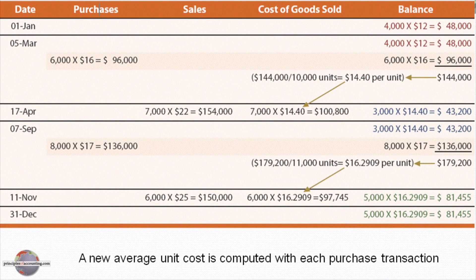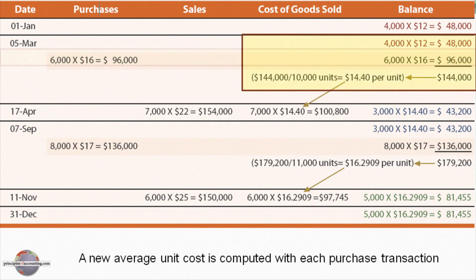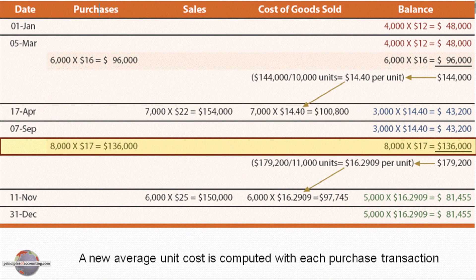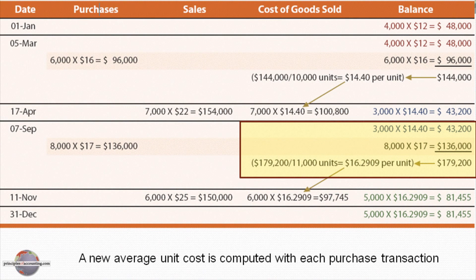Turning next to the perpetual average method, we again start with 4,000 units at $12. The mathematics become more calculation-intensive here. When we buy 6,000 units at $16, we then have $144,000 invested in 10,000 total units, giving us an average cost per unit of $14.40. When we sell 7,000 units on April 17th, we assign the average cost of $14.40 per unit, and we're left with 3,000 units at $14.40. When we buy again on September 7th, we have $179,200 of inventory across 11,000 units, so the average cost changes to $16.29.